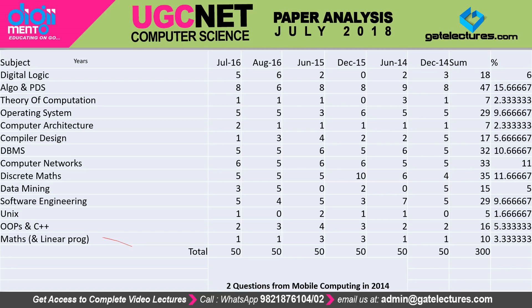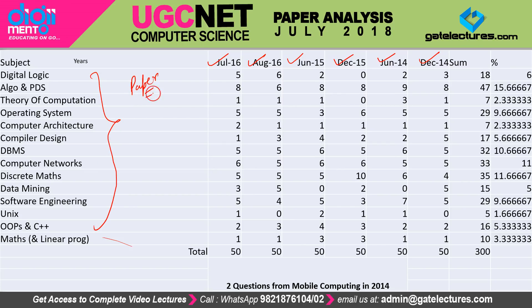This is the Paper 2 analysis for July 2016, August 2016, June 2015, December 2015, June 2014, and December 2014. In these previous question papers, across all subjects in Paper 2, we have seen that 6% of questions came from digital logic, 15.67% from programming, data structures and algorithms, 2.33% from theory of computation, 9.66% from operating systems, and 2.33% from computer architecture.